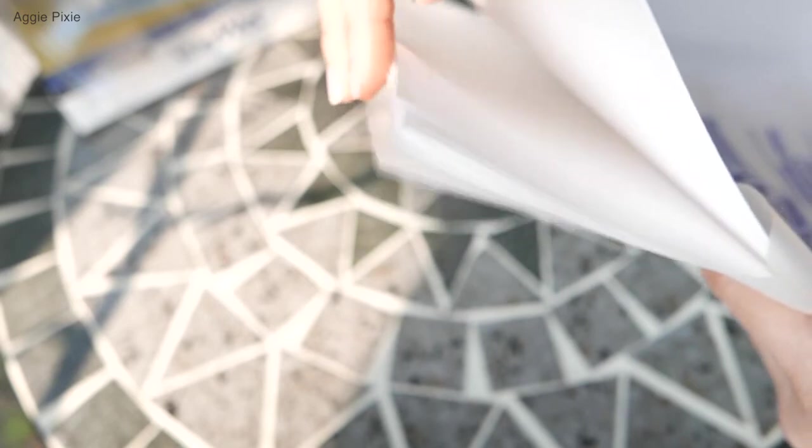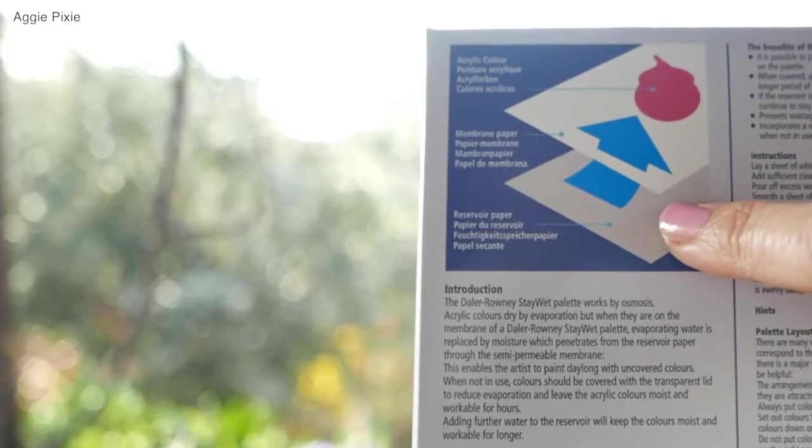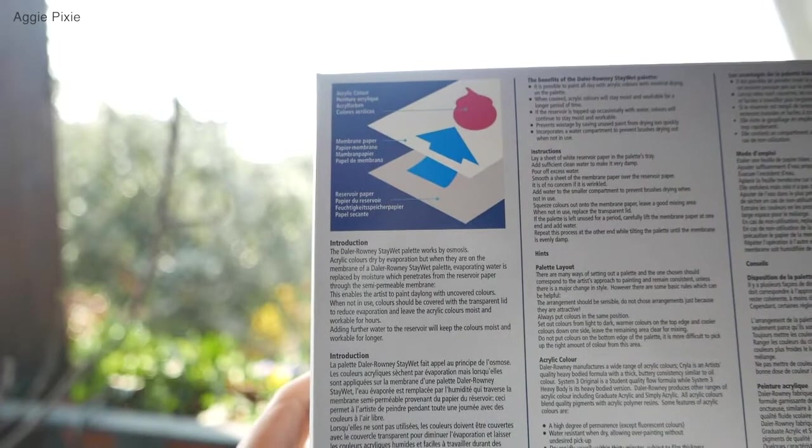So if you look on the back of the box, there are the instructions where you first put the reservoir paper, one sheet, and then on top of that you will put one sheet of the lighter membrane paper which will be your palette paper.